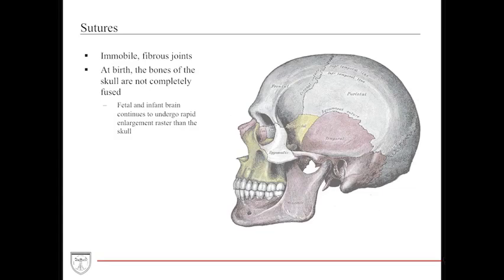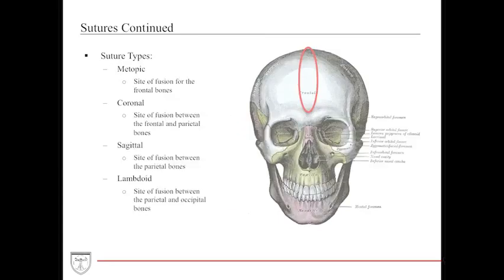Now let's discuss sutures — the immobile fibrous joints fused together to provide strong, durable protection for the skull and face. At birth, these sutures aren't fused; they're very movable. In a neonatal examination, you can elevate and depress different portions of opposing bones across suture lines to see if they are fused or not. These sutures need to remain open to allow for proper brain growth. Pretty much anywhere two bones meet and are fused in the face, they form a named suture.